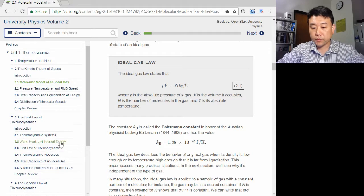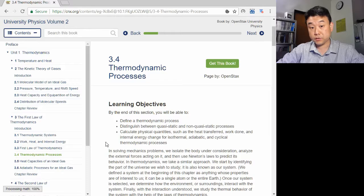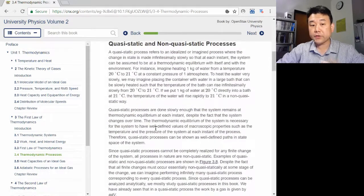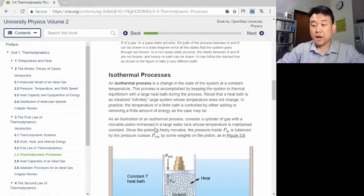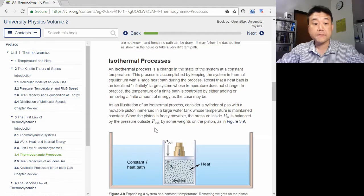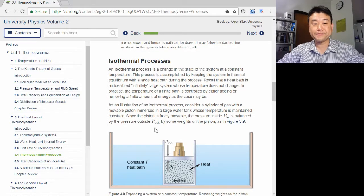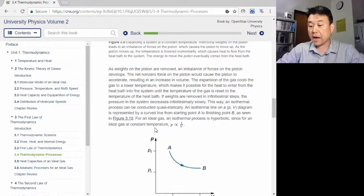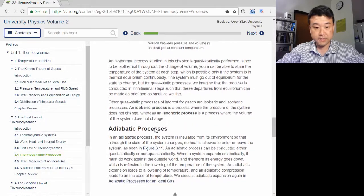For some of the thermodynamic processes we looked at, you can quickly figure out how temperature changes. Isothermal process says that the temperature is constant, simply enough.